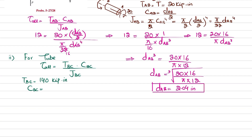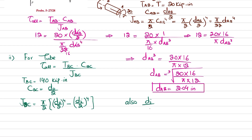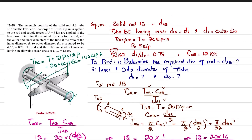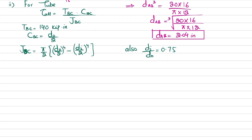c_BC is the outer radius, equal to d_outer / 2. For the polar moment of inertia of this hollow tube: J_BC = (π/2)·[(d_outer/2)⁴ − (d_inner/2)⁴]. It is also given that d_i / d_outer = 0.75, so d_inner = 0.75 · d_outer.